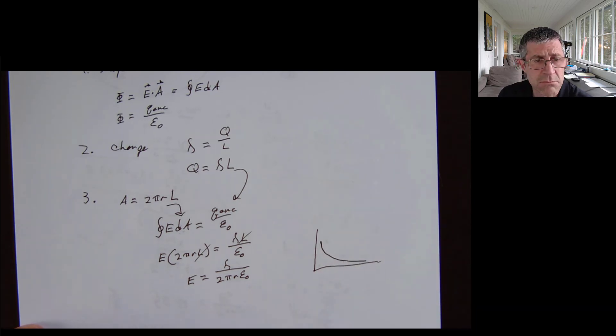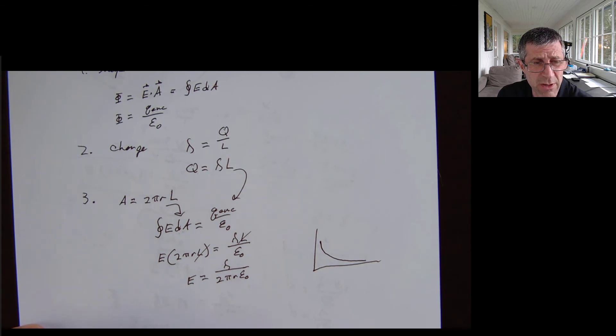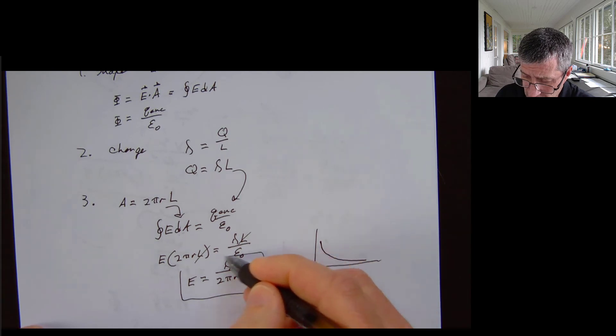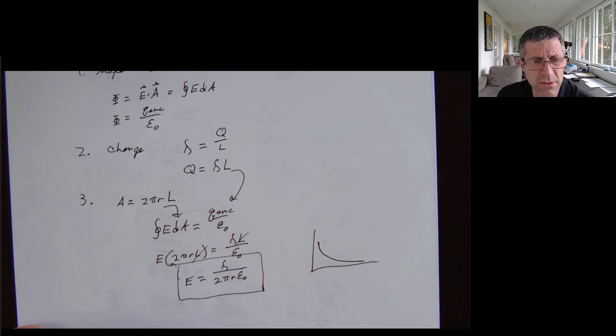So as I get further away, my electrical field drops, drops as the inverse. So this is the formula for electrical field of a line of charge.